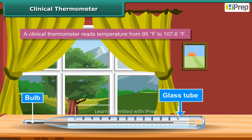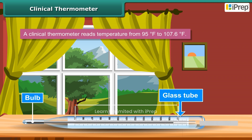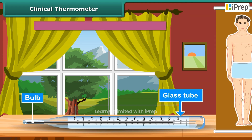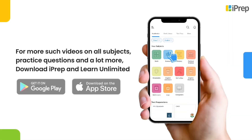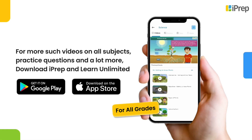A clinical thermometer reads temperature from 95 degrees Fahrenheit to 107.6 degrees Fahrenheit. The normal temperature of the human body is 98.6 degrees Fahrenheit. The clinical thermometer is also known as a doctor's thermometer.